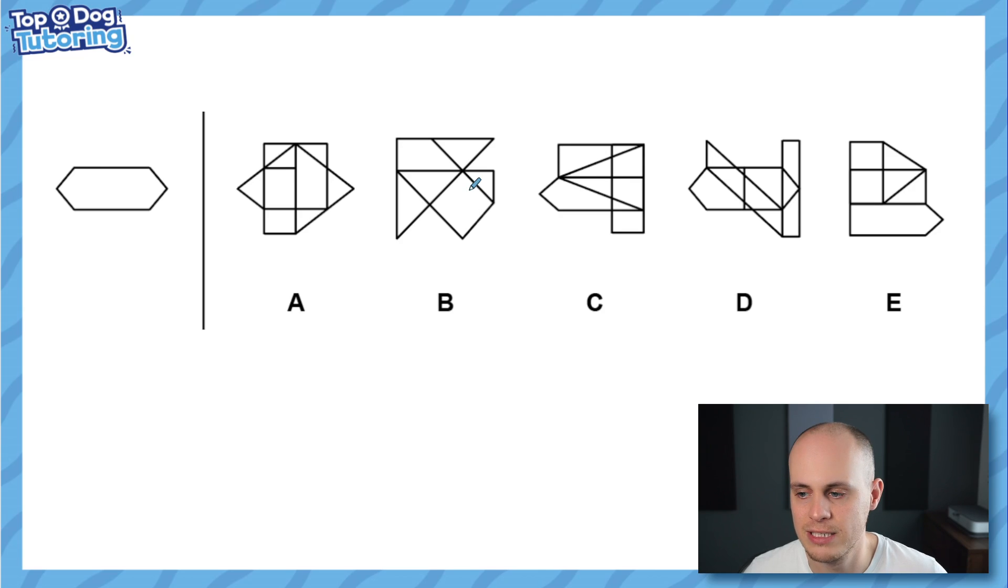Today I've got a nice easy one for you. It's a spatial reasoning that I think is pretty cool, pretty fair. And all we have to do is find the shape on the left in one of the shapes on the right. That's it. It's hidden within one of these figures on the right. But there are loads of traps.